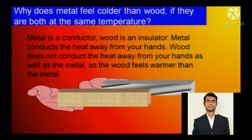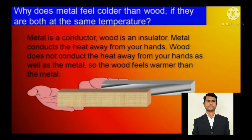Metal has numerous free electrons which are unstable and ready to bounce from one atom to another, whereas insulators also have unstable electrons but the quantities are very much less. Since the quantity is less, the heat transfer is lesser, so wood does not conduct heat away from your hands as well as metal. That is why wood is called an insulator.